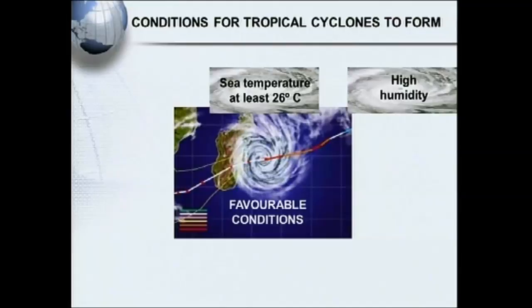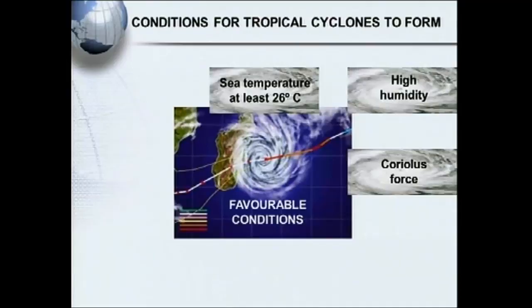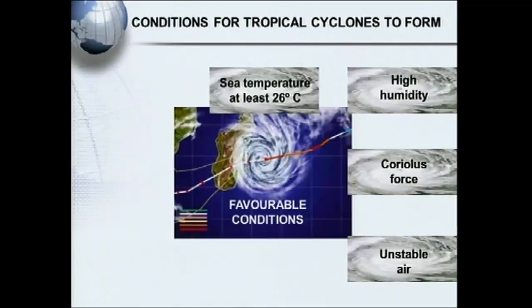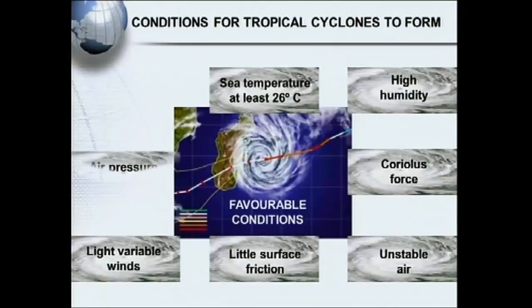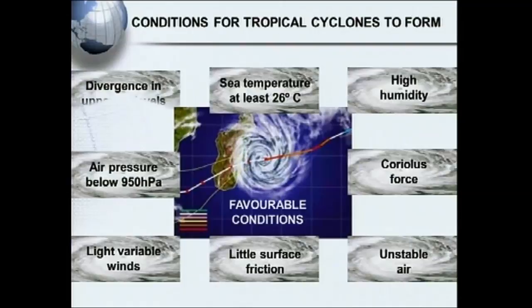Firstly, the sea temperature must be at least 26 degrees Celsius. Secondly, a high humidity. You need Coriolis force. You need unstable air, rising air. You need little surface friction — for that reason, it always forms over the sea. You need light variable winds. Air pressure below 950 hectopascals. And you need divergence in the upper air levels.